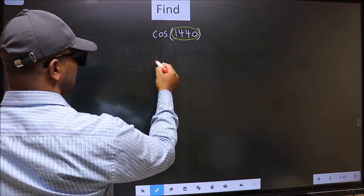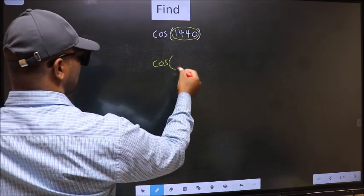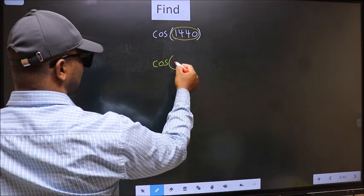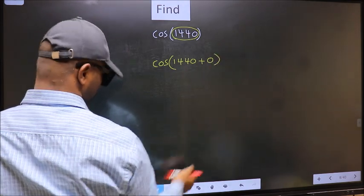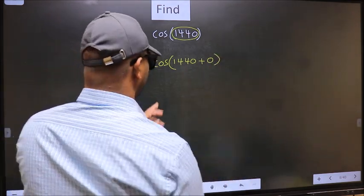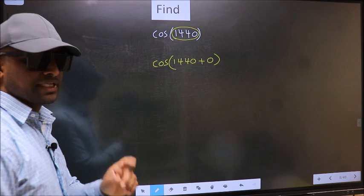So what we should do is cos, in place of this now we should write 1440 plus 0. This is your step 1.